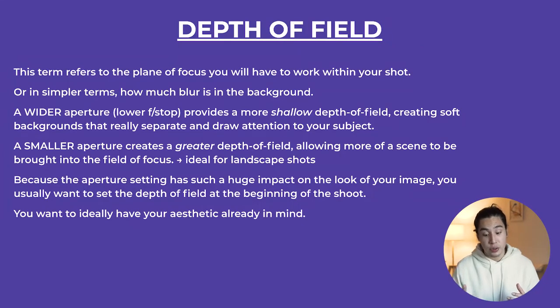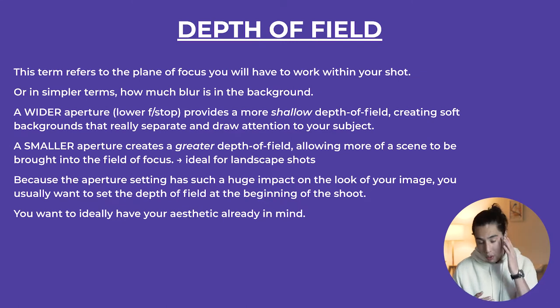Because the aperture setting has such a huge impact on the look of the image, you usually want to set the depth of field at the beginning of the shoot. There may be situations where you're shooting outside all day with so much light and you can't shoot at f2.8 because you're letting in too much light and everything's overexposed — and you don't have ND filters, which we'll get into later. ND filters basically act as sunglasses for your lenses. So ideally, you'd turn down your aperture to let in less light, or switch to adjusting ISO and shutter speed.